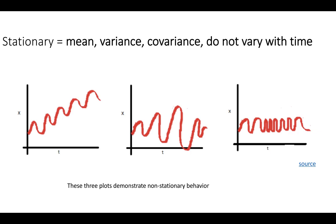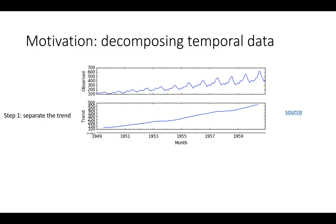There's a fancy time series word for this: these three concepts — mean, variance, and covariance not varying over time — are all captured in the word 'stationary.' So if your time series data is stationary, it just means that the data is not varying with respect to the mean, variance, or covariance. In our dataset, there is a trend upwards, so if we want to do time series analysis, we have to remove that trend.